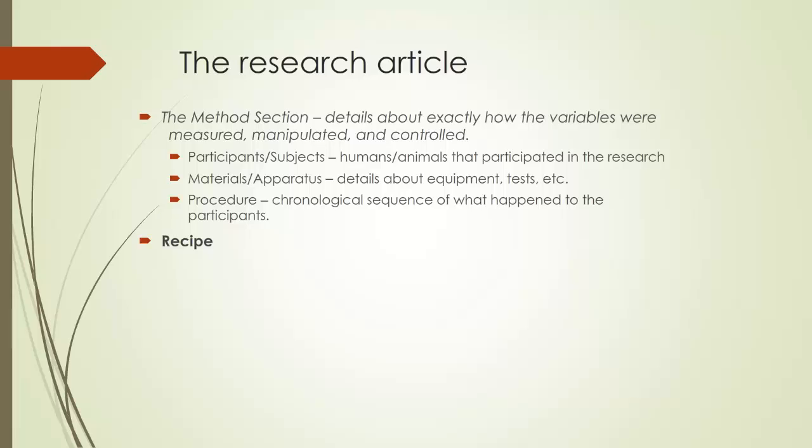So in this part of the methods section, you'll talk about the kinds of people that participated in your study. How old were they? What distribution of gender did you have? Were they all high income, low income? How is the income distributed? Anything about those people that could have influenced your results should go into this participant section.